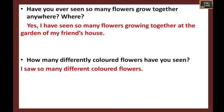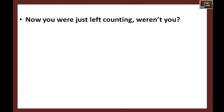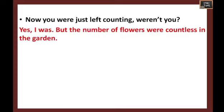Write the colors of the flowers you have seen — namely red, blue, green. The colors might be red, pink, blue, yellow, violet, white, or orange. You can mention their colors. Now you were just left counting, weren't you? You can start counting the flowers you have seen. Yes, the number of flowers was countless in the garden.